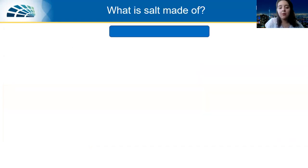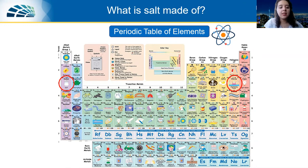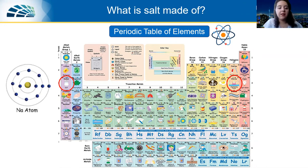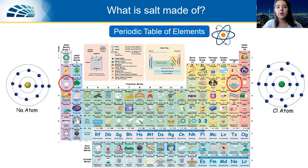Moving on, we want to talk about what salt is made of. Looking at the periodic table of elements, we have different elements, each with an atom that has a certain number of neutrons and protons in the nucleus and electrons surrounding it. If you look at the two main elements circled in red — first on the left, the sodium atom, and second on the right, the chlorine atom or Cl — each has certain numbers of protons and electrons. Salt is made by the combination of these two elements: sodium loses one of its electrons and chlorine receives it.